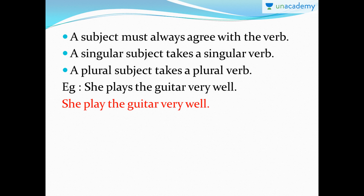A subject must always agree with the verb. We know what a subject is — it is something that the entire sentence talks about. It usually comes at the beginning of the sentence and it must always agree with the verb. If the subject is singular, you must give a singular verb. If the subject is plural, you always take a plural verb.